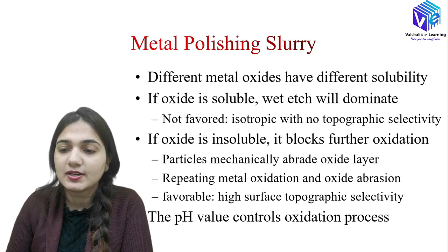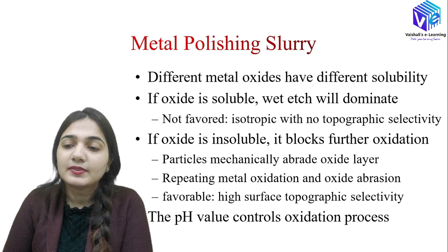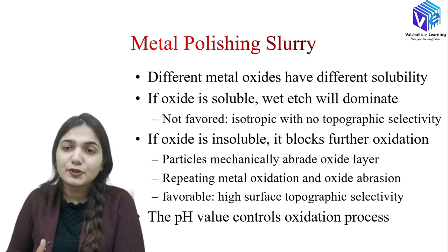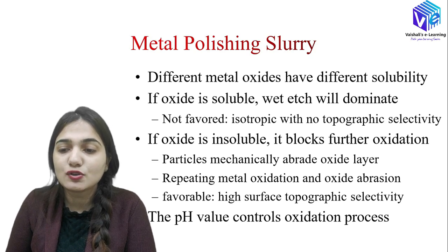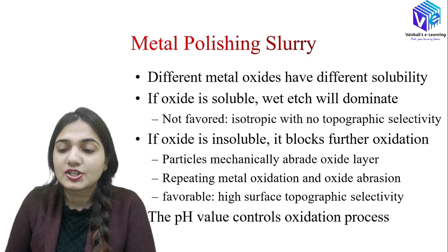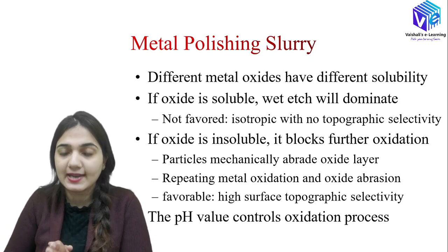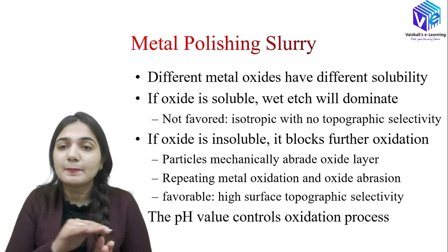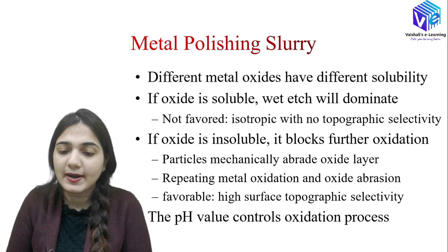The slurry pH controls two competing metal removal mechanisms: metal corrosive wet etching and metal oxidation passivation. If the oxide is soluble, wet etching will dominate — this is not favored because it is isotropic with no topographic selectivity. We want higher removal from rough surfaces. If the oxide is insoluble, it blocks further oxidation; particles mechanically abrade the oxide layer, repeating metal oxidation and oxide abrasion. This is favorable because we have high surface topographic selectivity and will get a better planar, uniform structure.